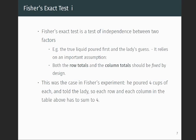But the key thing to remember is that Fisher's Exact Test actually relies on a very important assumption, that the row totals and the column totals should be fixed by design. In other words, in our example, there should be exactly four cups with milk first and tea first. And the lady should guess exactly four for each category. And so this is a very key assumption.